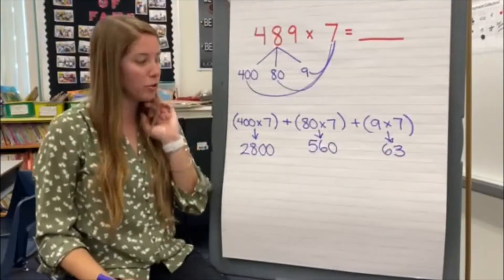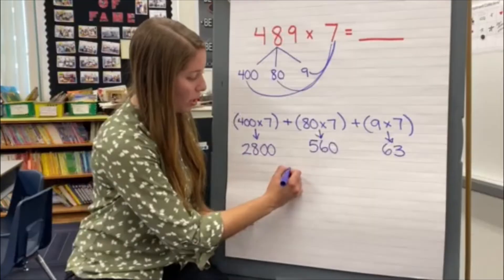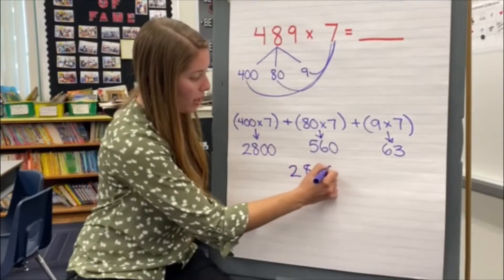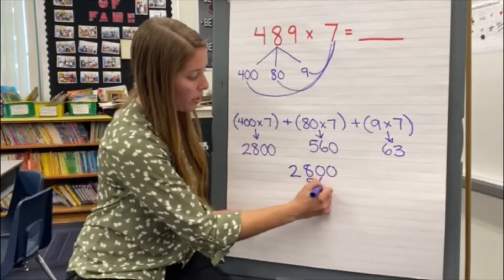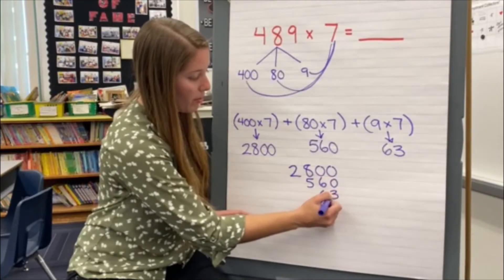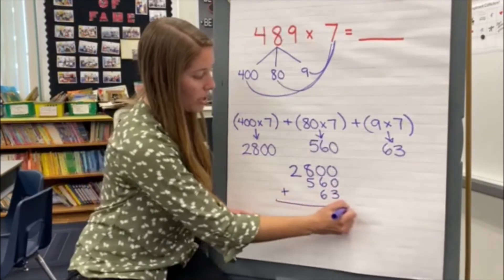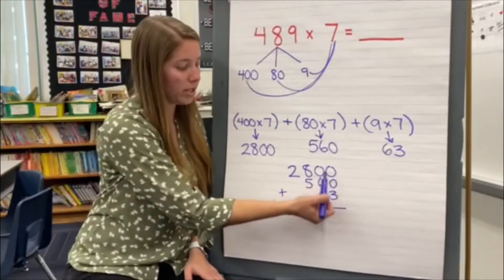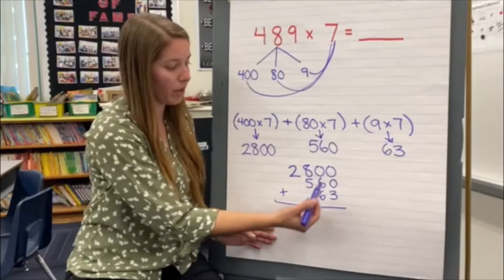Now we're going to put all of those pieces back together. We start by stacking up those numbers: 2,800, 560, and 63. Be very careful as you add up that you are stacking those numbers with the correct place value — all the ones together, tens together, hundreds together, and thousands together.